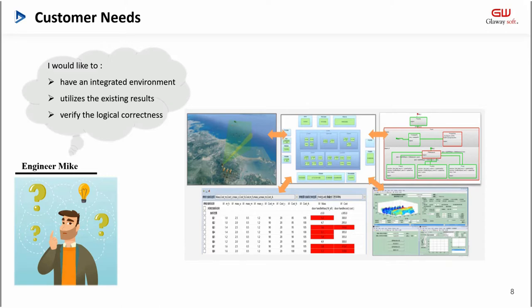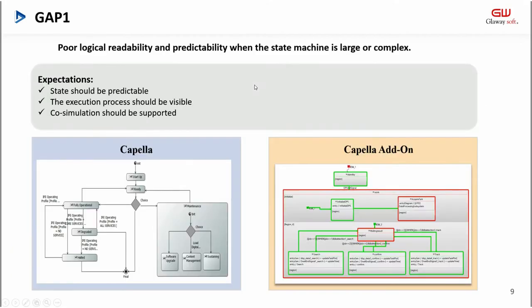I will analyze the gaps in the tools to achieve the above user needs. We propose five gaps. The first gap is poor logical readability and predictability when the state machine is large or complex. The user expectations are as follows: states should be predictable, the execution process should be visible, and code simulation should be supported.